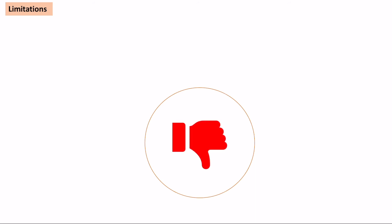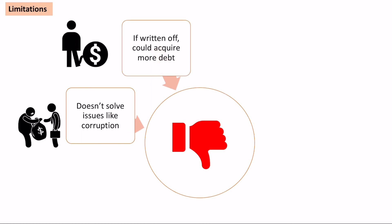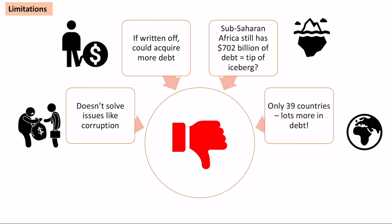There are also limitations and negatives to debt relief. One obvious issue is that getting rid of debt doesn't solve problems that often plague countries, such as corruption — that's not going to be solved by removing debt. Also, a country might get itself into more debt because it knows the debt might be written off again. In terms of scale, sub-Saharan Africa still has 702 billion pounds worth of debt. There's also lots of debt in the developed world. Is this actually solving a major problem, or is it just the tip of the iceberg? And only 39 countries being included isn't really going to make a huge impact.